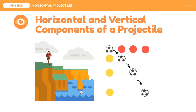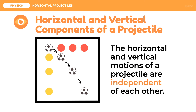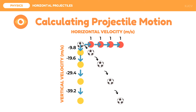Although the two directions of the projectile resulted in one trajectory or path, the two directions did not affect each other. That means the horizontal and vertical motions of a projectile are independent of each other. We can see that the projectile had a constant horizontal velocity of 1 meter per second throughout. On the other hand, the vertical velocity was increasing — the negative sign indicates the projectile is moving downwards — increasing by 9.8 meters per second each interval. That means the projectile has a constant acceleration for the vertical component, which is the acceleration due to gravity.